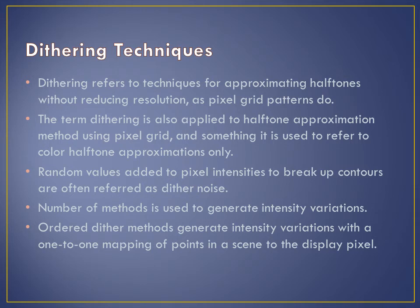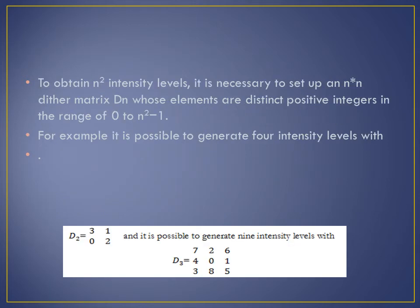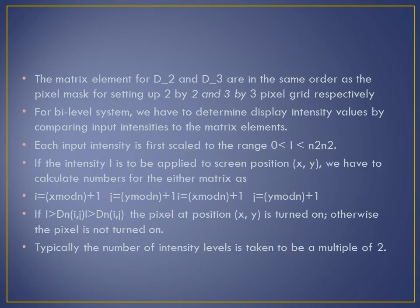To obtain n² intensity levels, it is necessary to set up an n×n dither matrix Dn whose elements are distinct positive integers lying in the range 0 to n²−1. For example, it is possible to generate four intensity levels with a 2×2 matrix D2 having elements 3, 1, 0, 2. We can also generate a nine-level matrix D3 whose elements range from 0 to 8. The matrix elements of D2 and D3 follow the same order as the pixel mask for setting up 2×2 and 3×3 pixel grids respectively.